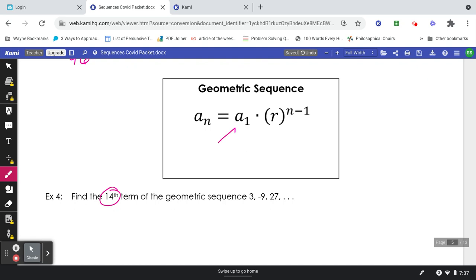So the formula, that term right there means the first term. Right here is our common ratio. And the n, remember, is the term number.